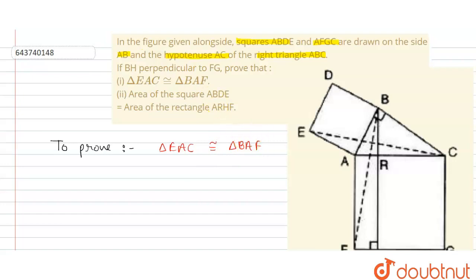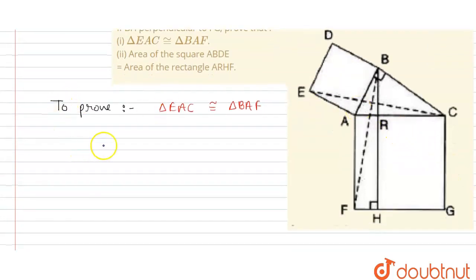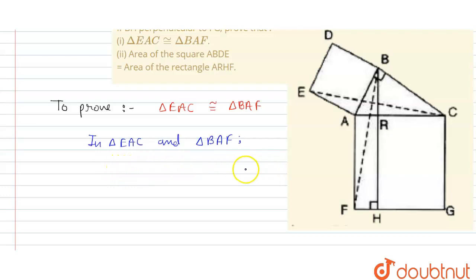This is our aim. To solve this, we take triangle EAC and triangle BAF and write the conditions for these two triangles. The first condition is EA is equal to BA, because EA and BA are sides of the square.